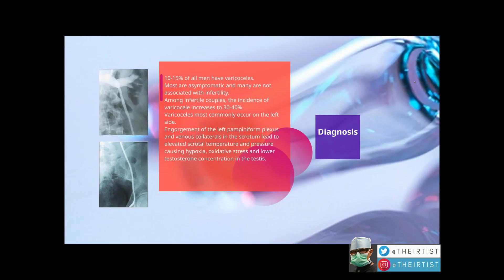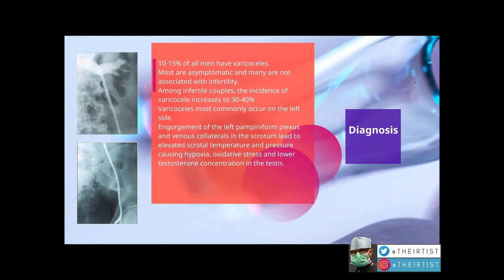So what is varicocele? Varicocele is basically dilatation and reflux of blood within the spermatic vein, leading to a whole range of symptoms. They affect about 10 to 15 percent of all men. Mostly asymptomatic, but many are associated with infertility. Among infertile couples, the incidence of varicocele increases to 30 to 40 percent. Varicocele most commonly occurs on the left side.